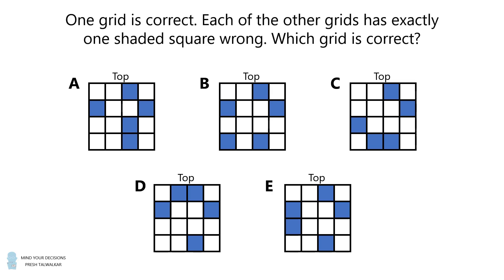Of the five grids, one grid is shaded completely correctly. Each of the other four grids has exactly one shaded square wrong. Which grid is correct? Pause the video if you'd like to give this problem a try, and when you're ready, keep watching to learn how to solve this problem.